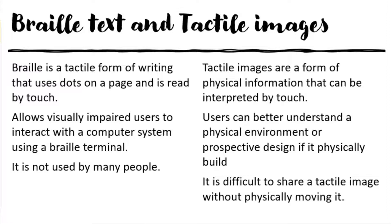Visually impaired users can feel the object instead of seeing it. Tactile images can also be used as prototypes. The downside of tactile images is that they are hard to move around — you don't want to transport a massive prototype of a multi-million-pound building with a hundred floors. And creating them requires special equipment, such as a 3D printer.